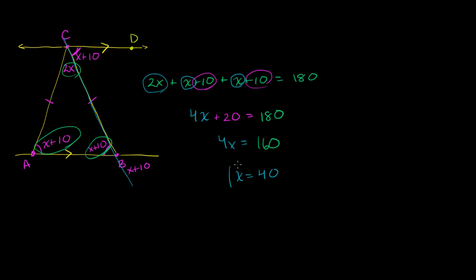And we're done. We figured out what x is, and we can figure out what these angles are. If this is x plus 10, then 40 plus 10 gives us a 50 degree angle. This is 2x, so 2 times 40 gives us an 80 degree angle. You should never assume anything based on how a diagram is drawn. So the top angle is 80 degrees, and the two base angles are each 50 degrees. 50 plus 50 plus 80 adds up to 180 degrees.